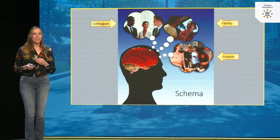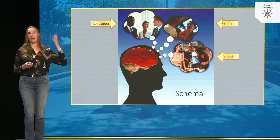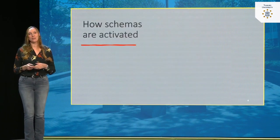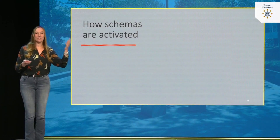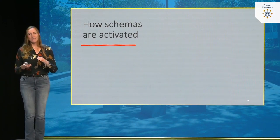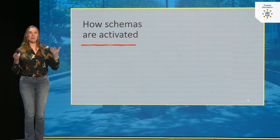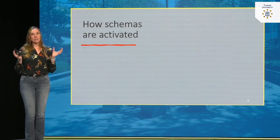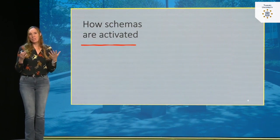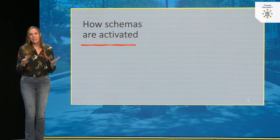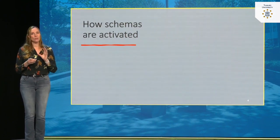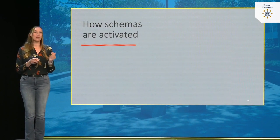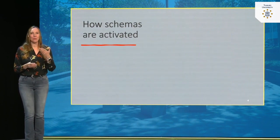Luckily for us, these schemas are not always activated — that would be exhausting if you were all the time thinking about all the information in your brain. These schemas are sometimes activated and sometimes they aren't. It's important to understand when they become activated, because the moment a specific part of the brain with a certain type of knowledge becomes active, it starts to impact your decision making.